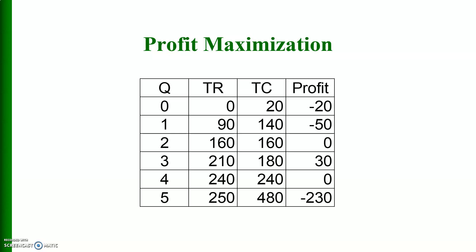For profit maximization, profit is the difference between total revenue and total cost. When output level is zero, total cost is positive and total revenue is zero, so profit is negative. Even when producing one unit, profit is minus 50. When producing two units, profit is zero, then it increases, and finally it returns to zero again.